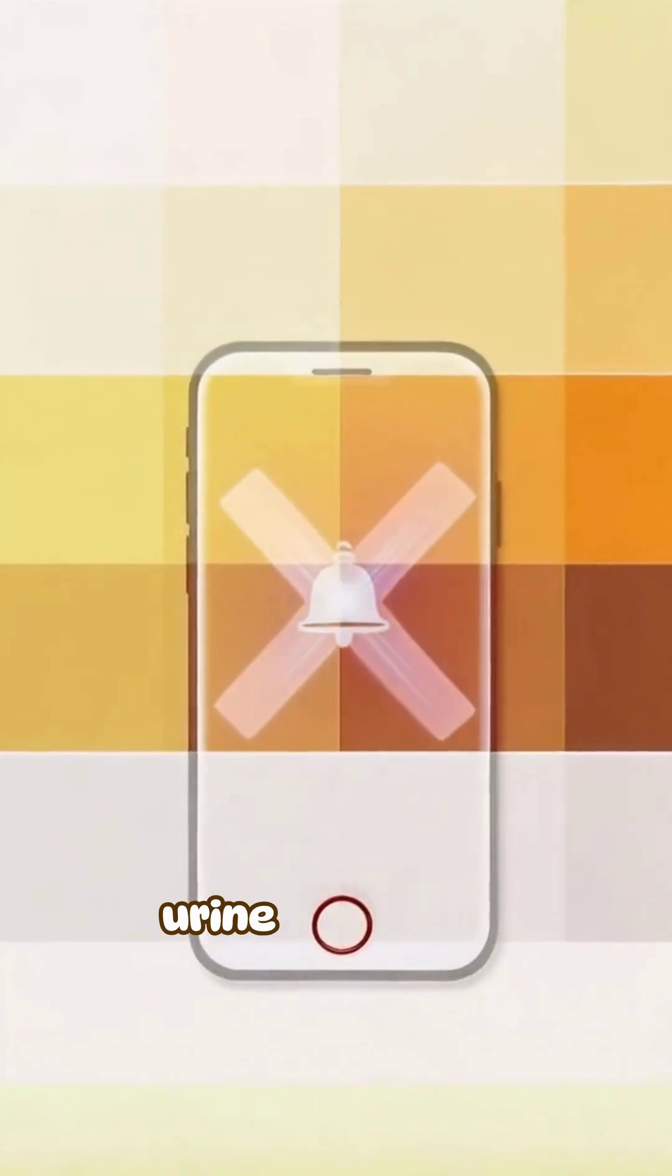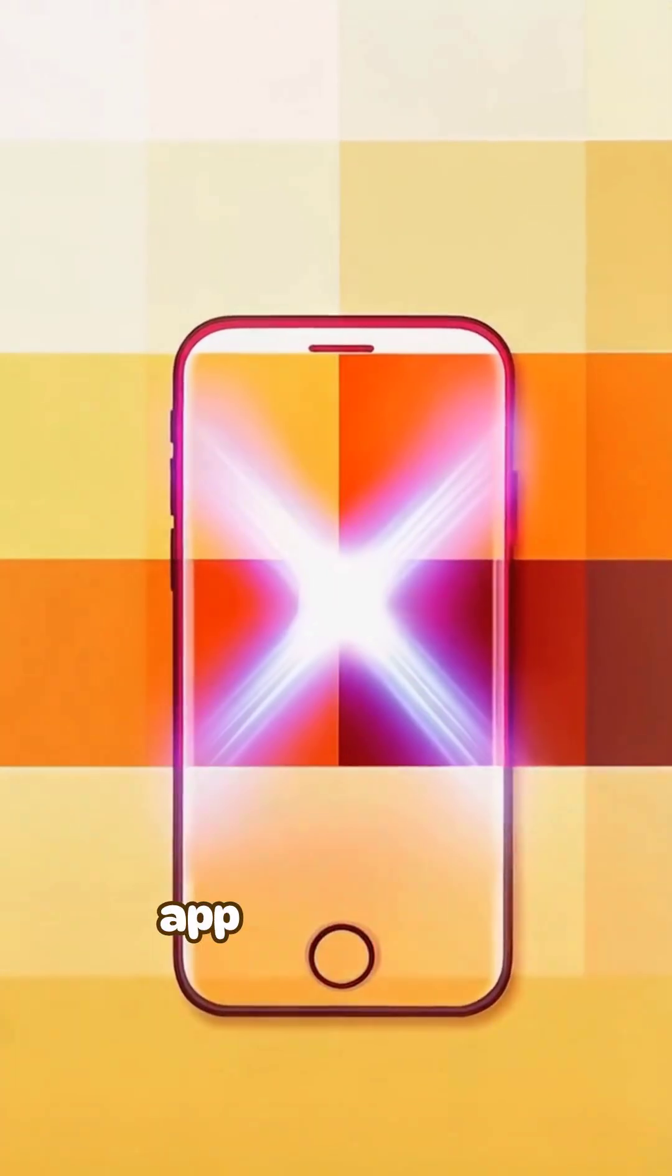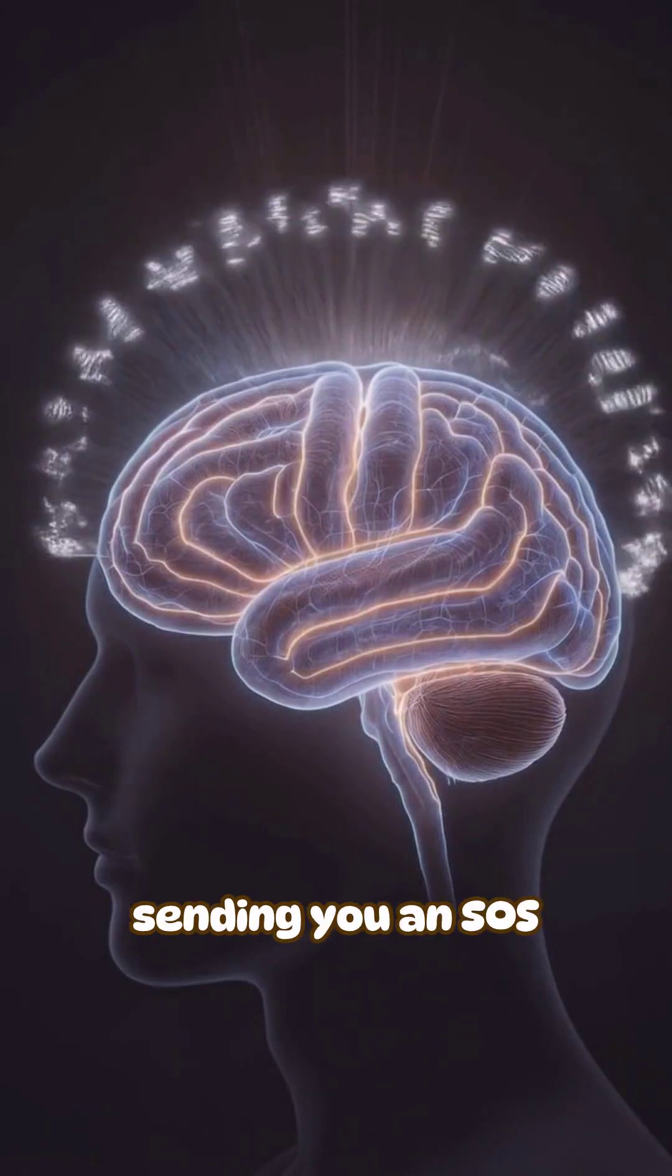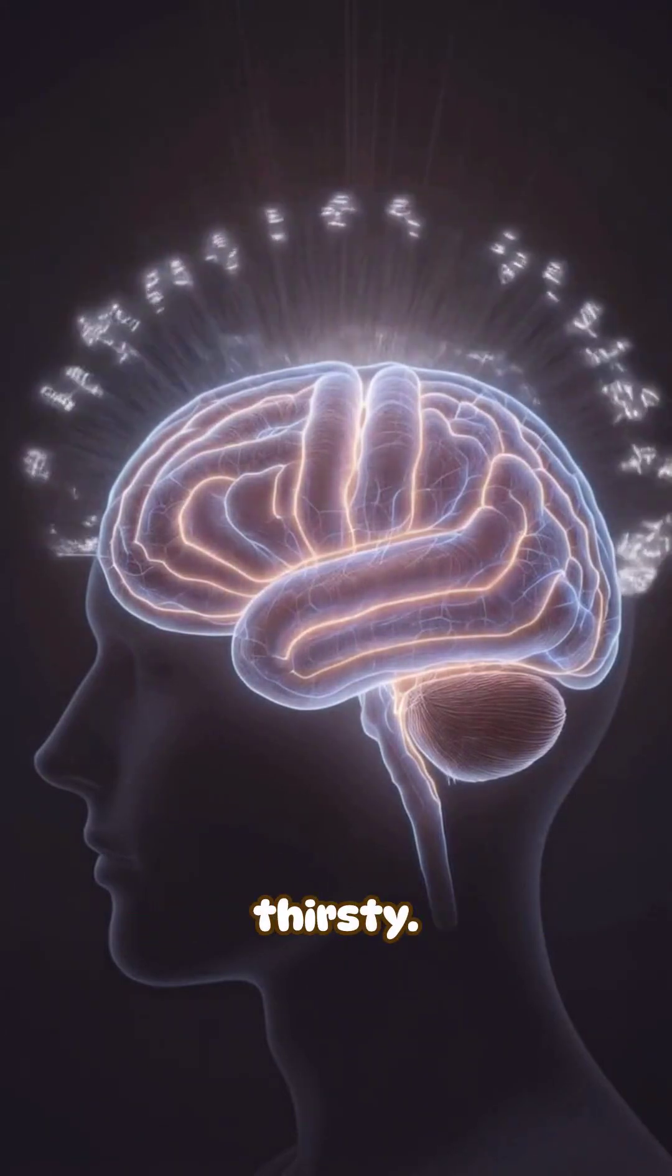The color of your urine is a better indicator than any app or reminder. Your brain is basically sending you an SOS signal way before you realize you're thirsty.